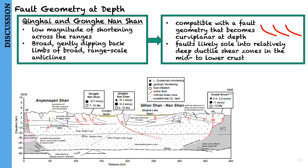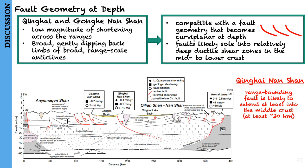They estimate detachment depths for the Qinghai and Gonghe-Nanshan. Across the width of these ranges, they found that the range-bounding fault is likely to extend at least into the middle crust, so at least around 30 km. This depth extent is also consistent with the mechanical properties of the middle-upper crust inferred from geophysical data.